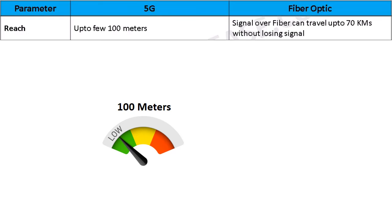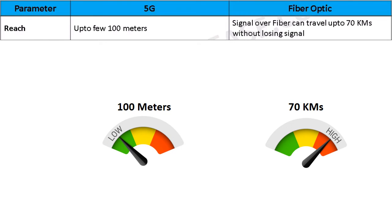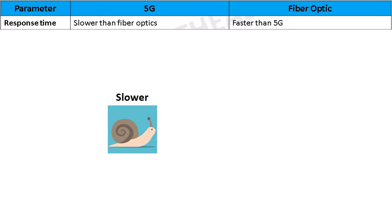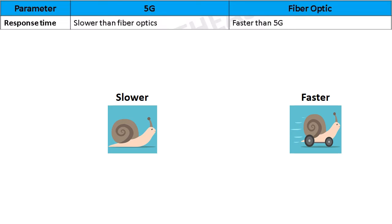One major drawback of 5G technology is that each cell or station can have coverage of only up to a few hundred meters, while fiber can provision signals reaching up to 70 kilometers. Signal support up to 70 kilometers is possible on single-mode fiber with special types of transceivers. Considering that 5G works on radio waves and is a wireless technology, its response rate is lower when compared to fiber optic technology.